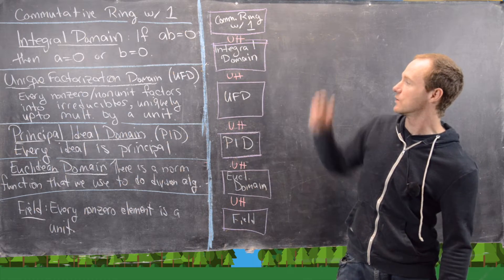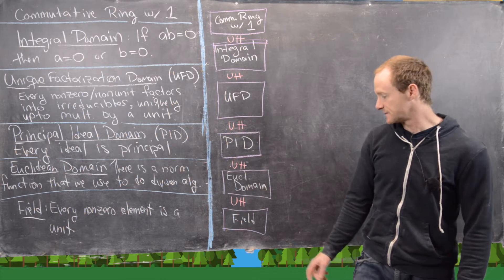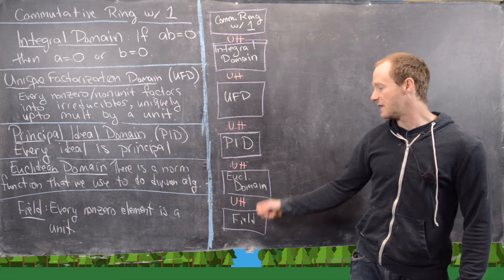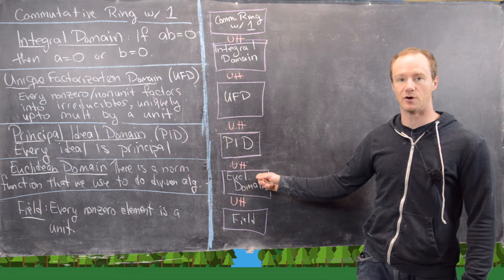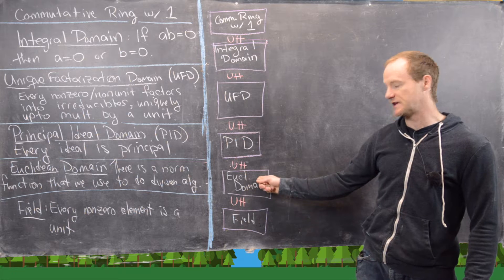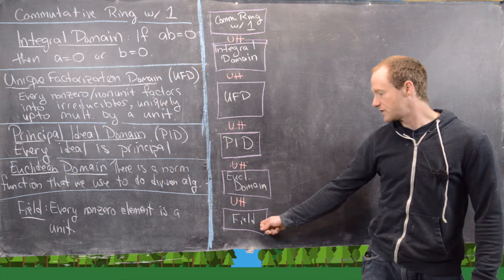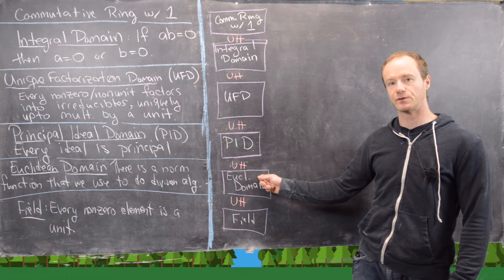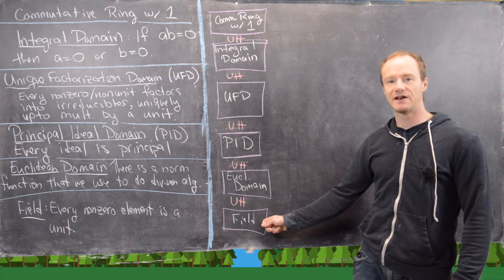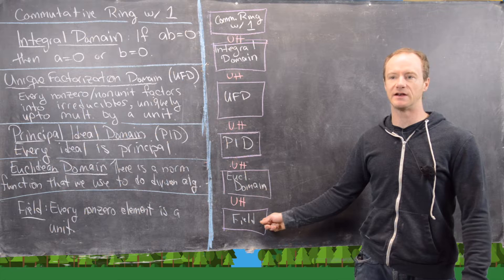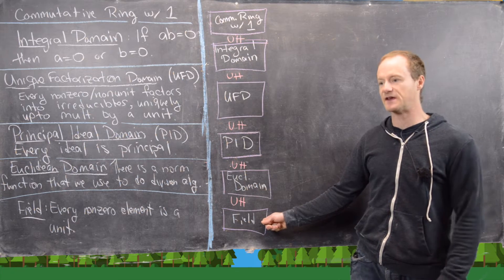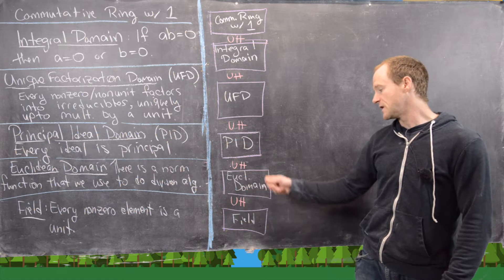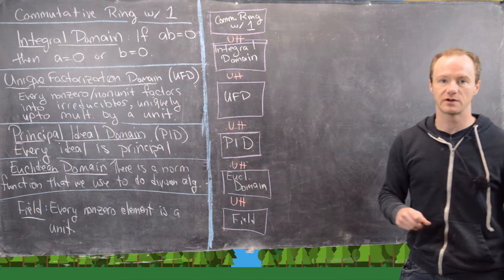In fact, we've got the following inclusion of ideas. So the most restrictive down here is a field. And then up from that is a Euclidean domain. So every field is a Euclidean domain. And you can see that really easily because Euclidean domains have division with remainder. But inside of a field you never need a remainder because you can always divide by anything because everything has an inverse except for the zero element.